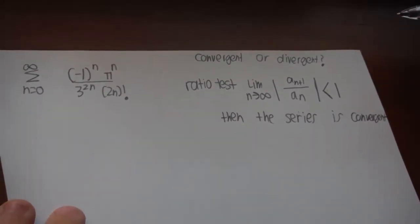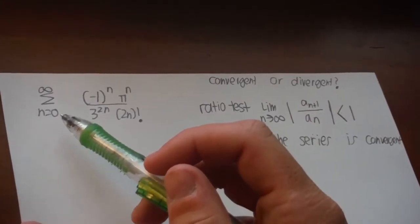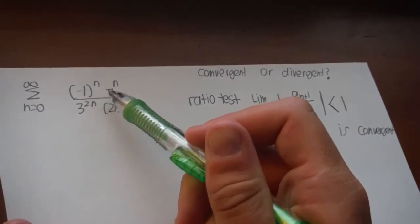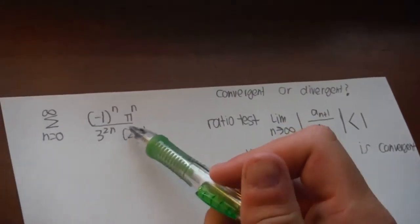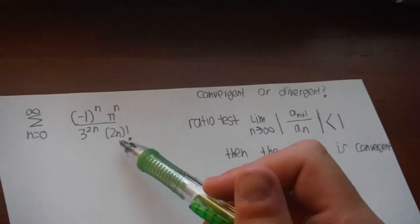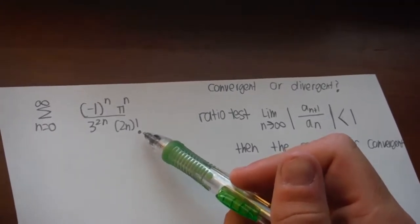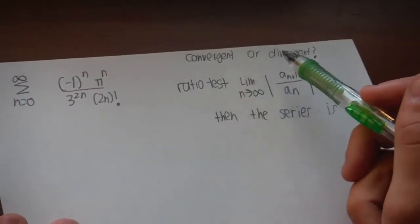Okay, so the problem is the summation of negative one to the n times pi to the n all over three to the two n times two n factorial. And is this convergent or divergent?